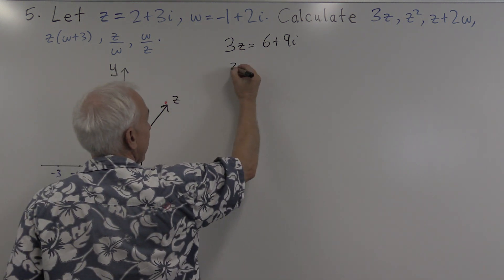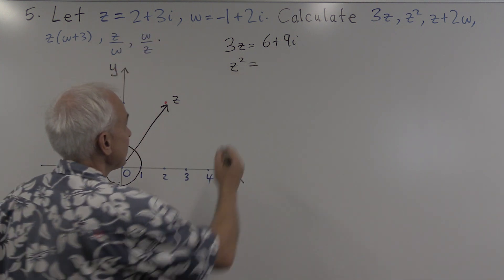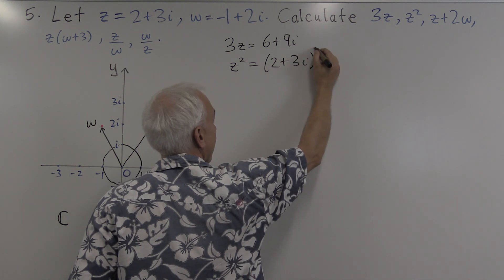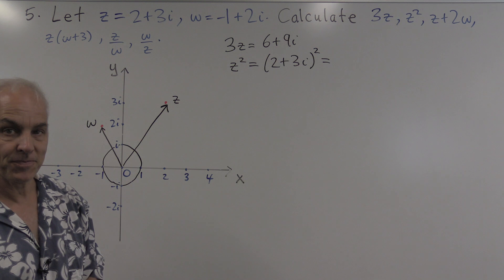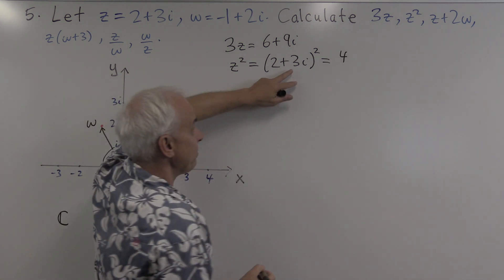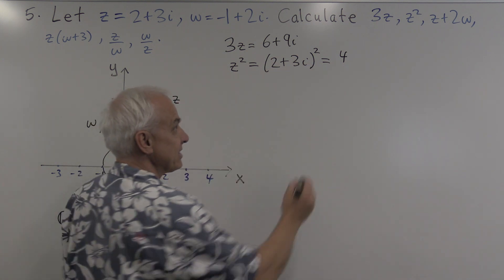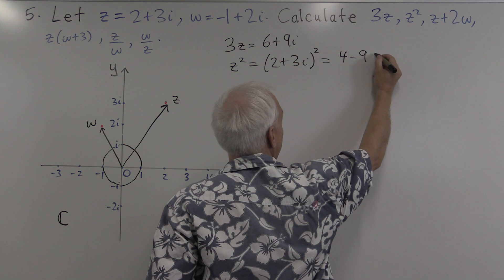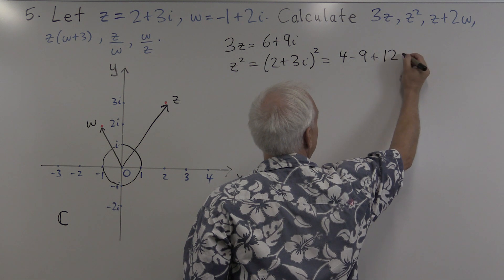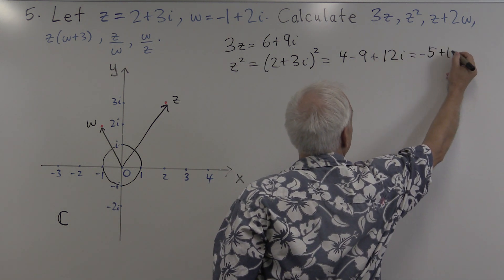Let's calculate z squared. z squared is 2 plus 3i, squared. When we expand that out, we get the square of the first term, plus the square of the second term — 3i squared will be minus 9 — plus twice the product, which will be 12i, for a total of minus 5 plus 12i.